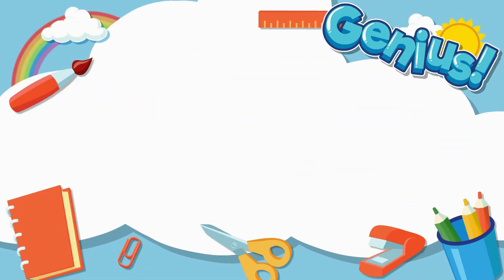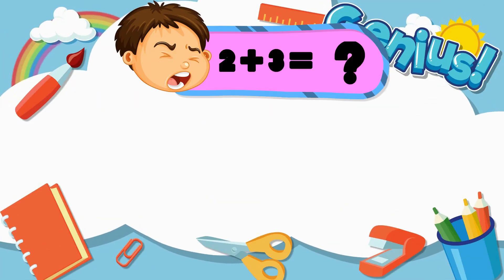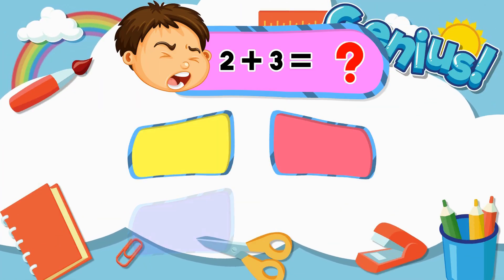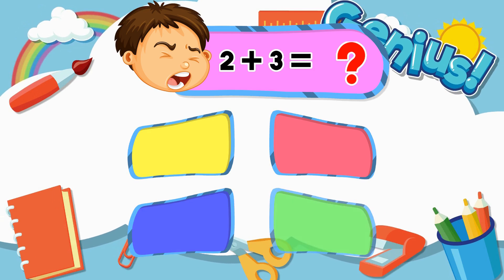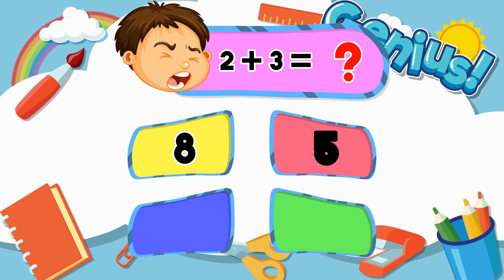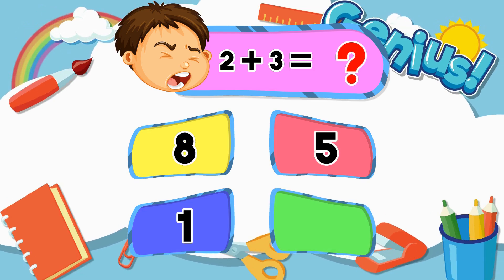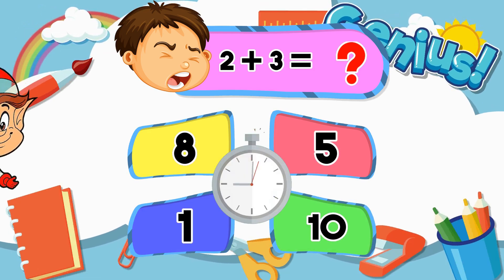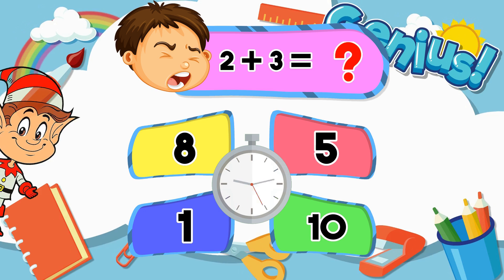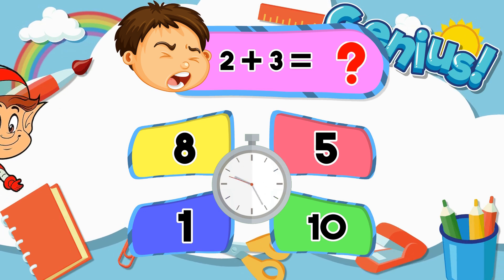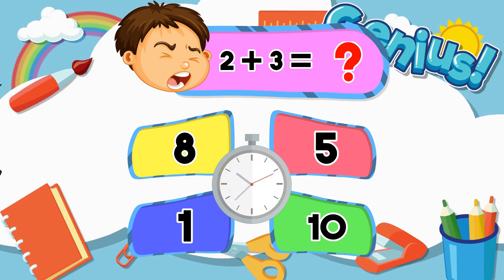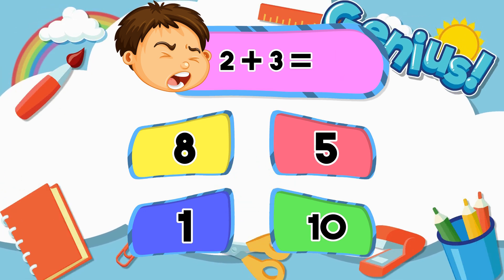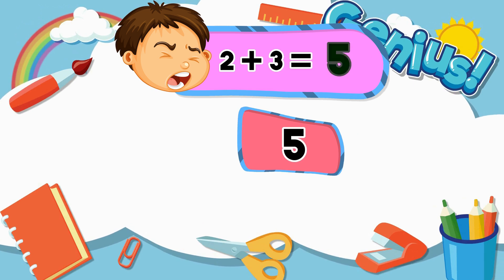What is 2 plus 3? Options: 8, 5, 1, 10. Answer: 5.